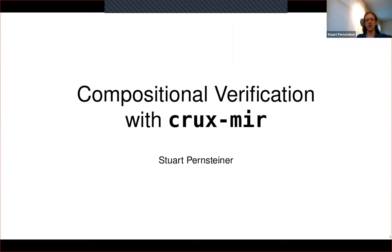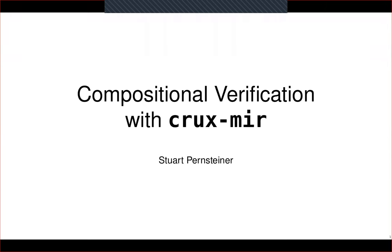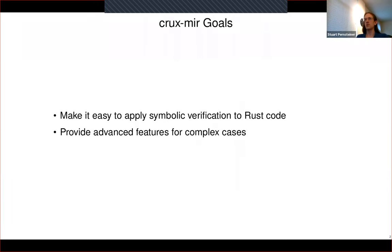I'm going to be talking about the CruxMirror tool, which is a symbolic execution tool for Rust code. Specifically, I'm going to get into some of the more advanced features that we've been adding recently. We're doing compositional verification to help the tool scale to larger and more complex proofs. I'll start with what CruxMirror is in general, how it works, what we can do with it, and then get into the more advanced features.